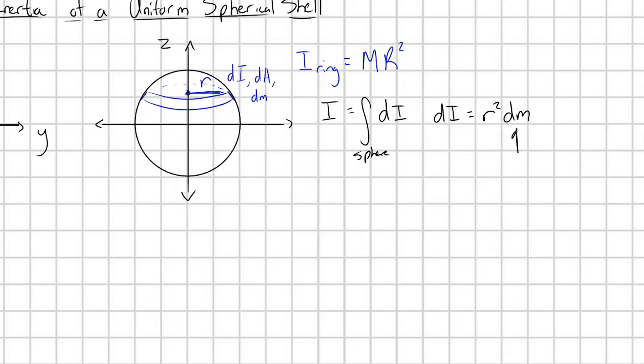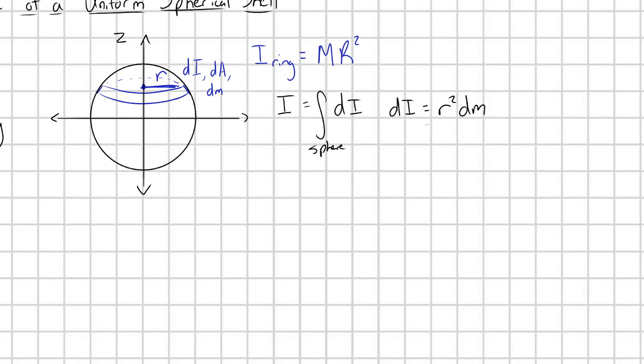Now, what is dm going to be? Because we know we're going to have to replace this dm. R is going to be some function of position, right? And dm is not, right? So we need to make our variable of integration match our integrand. So in order to rewrite dm, let's remind ourselves about mass density.